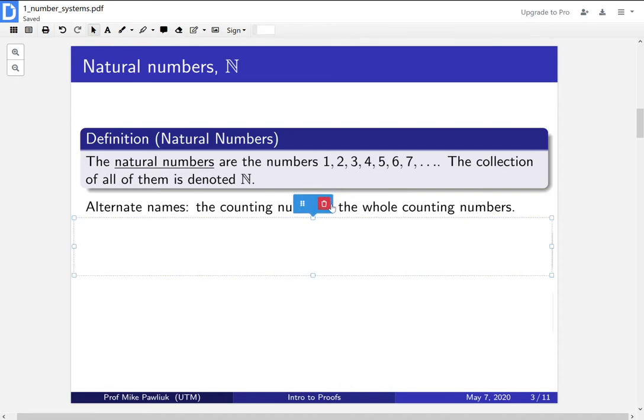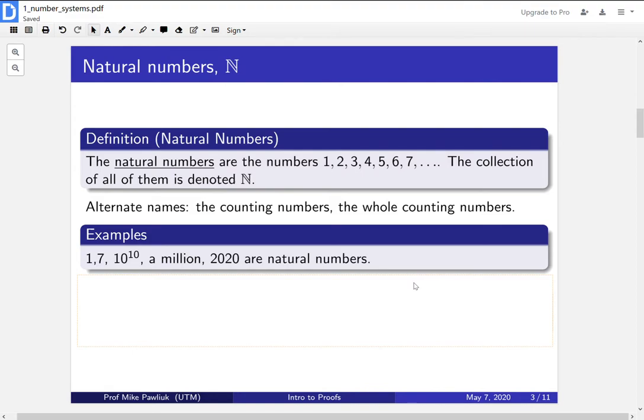These are our basic building blocks. So some examples of natural numbers are 1 or 7 or some huge power of 10, a million, 2020. These are all natural numbers.